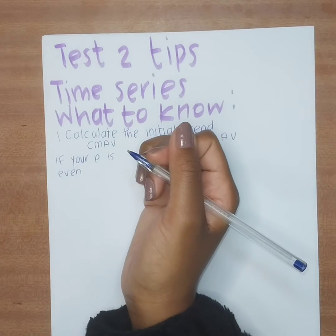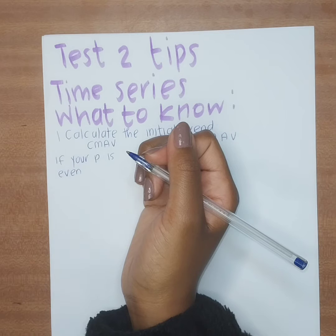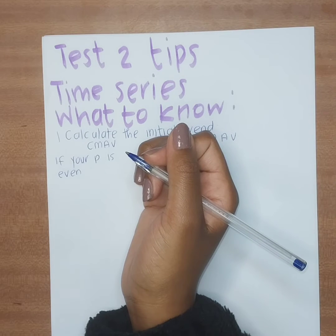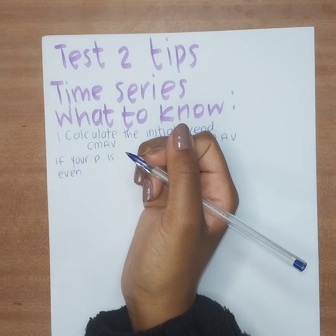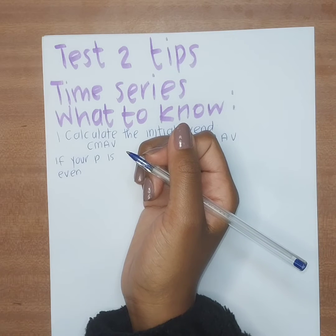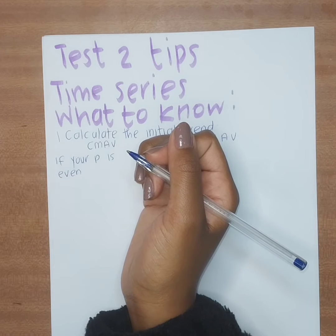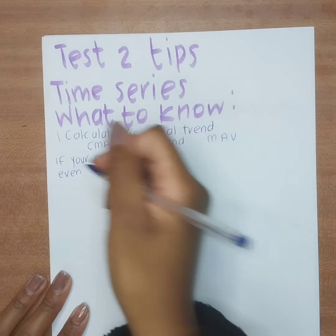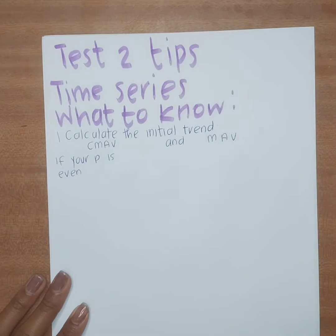The hint is when they tell you the data is recorded quarterly — quarterly means p equals 4, which is even. If they tell you sales were recorded monthly, p is 12, still even. So whenever p is even, you always calculate a CMAV.